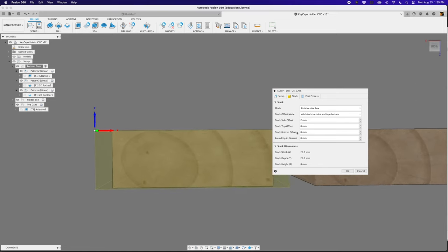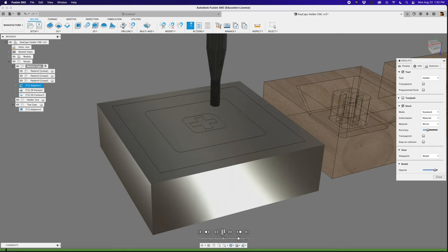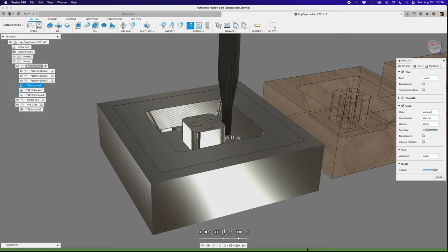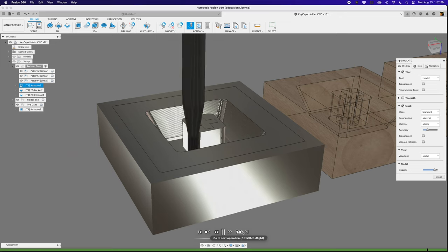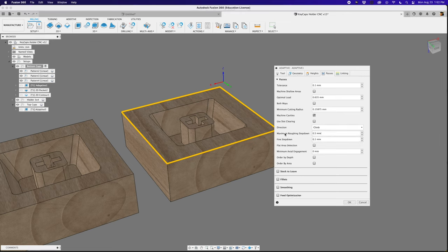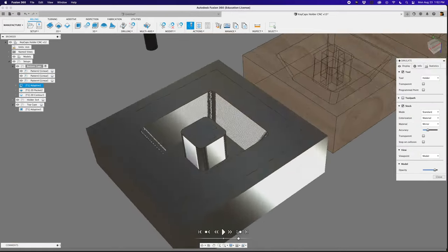For the first operation, I used a 1/16th inch flat end mill and adaptive clearing to carve out the internals of the keycap. I set the maximum step down to half a millimeter and then the fine step down to just 0.1 millimeters. This way we get a fine surface finish on those drafted angles.